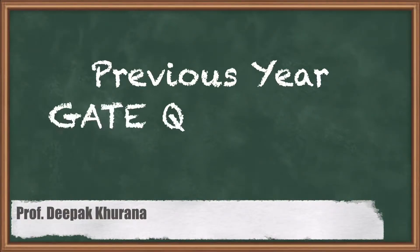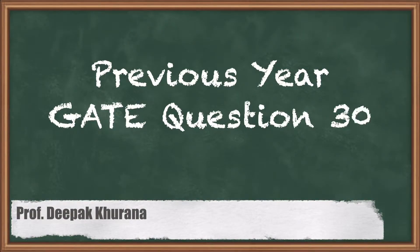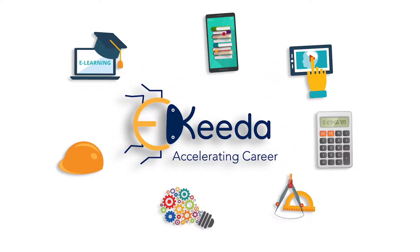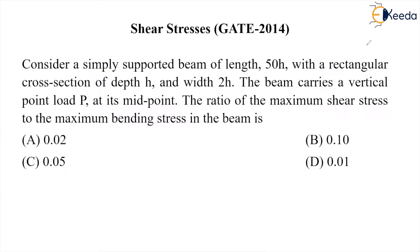Hello students. In this session, let us solve a question on shear stress. Consider a simply supported beam of length 50h with a rectangular cross section of depth h and width 2h. The beam carries a vertical point load P at its midpoint. The ratio of maximum shear stress to the maximum bending stress in the beam is what we have to find out.